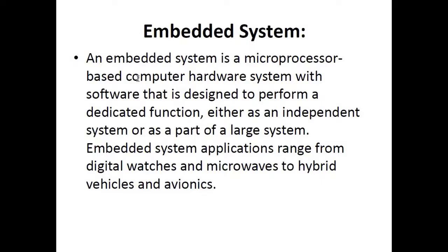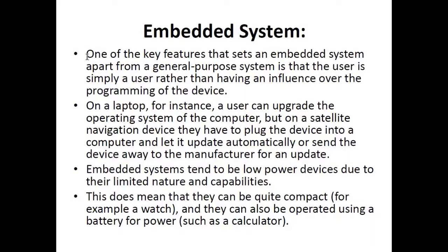Embedded system applications range from digital watches and microwaves to hybrid vehicles and avionics. An embedded system is basically a computerized system or a circuit that is controlled by a microprocessor and is designed to perform some specific task — for example, to control an automatic washing machine, run a digital clock, or run other electronic devices such as the autopilot of an aeroplane.